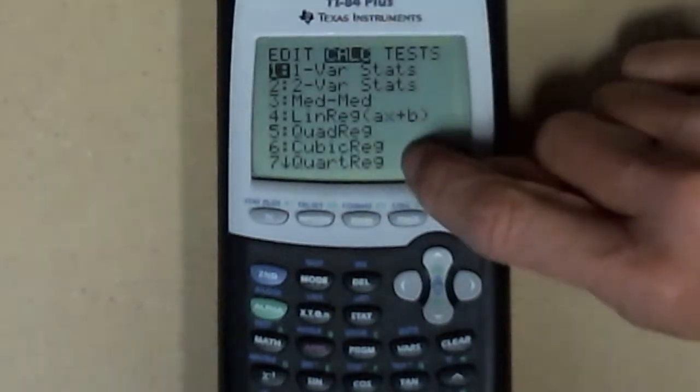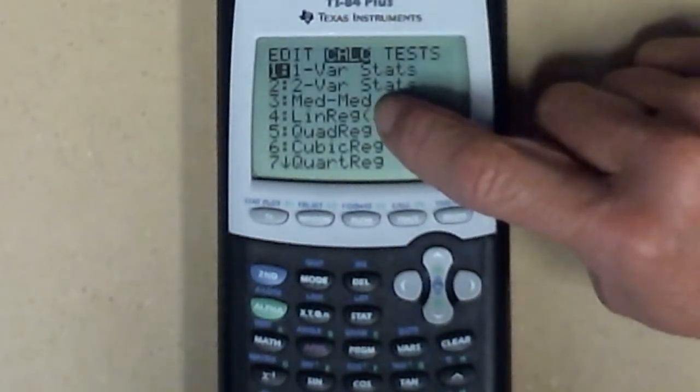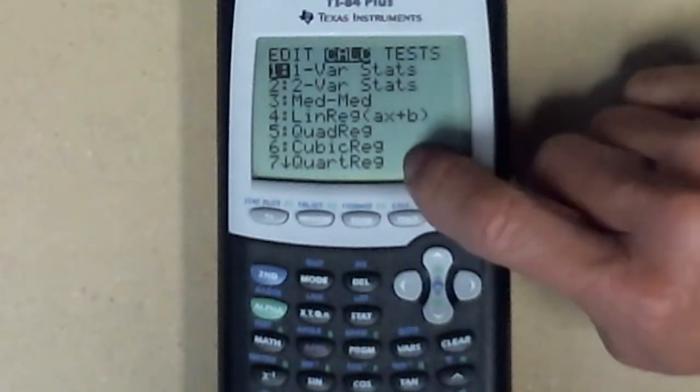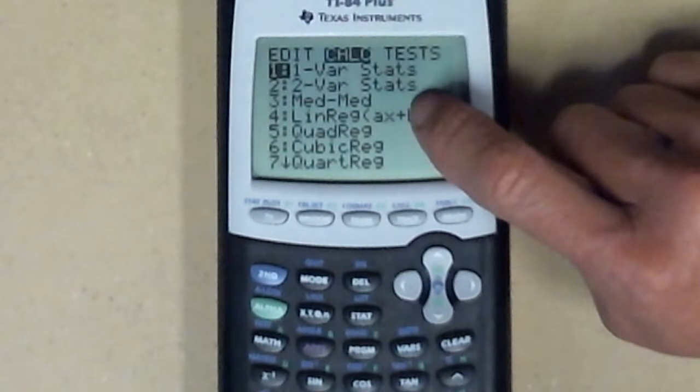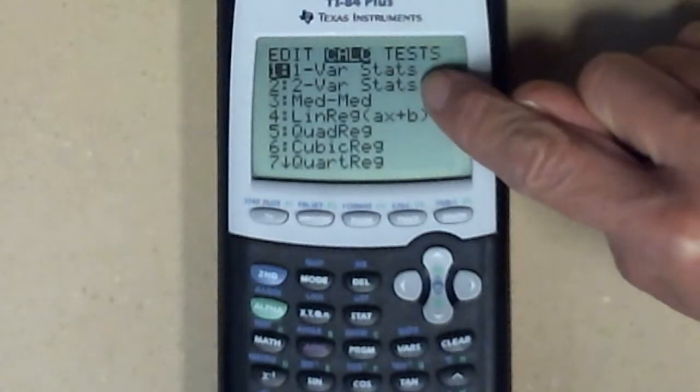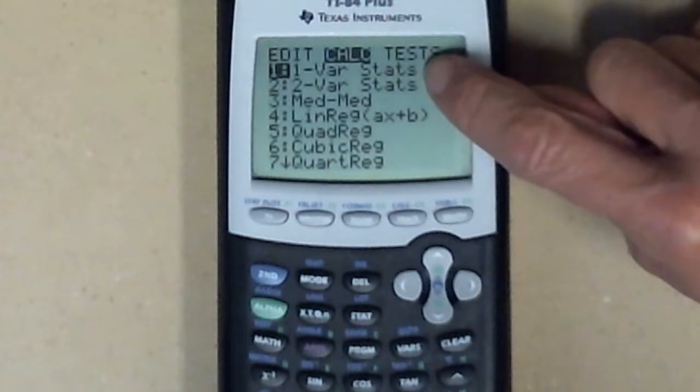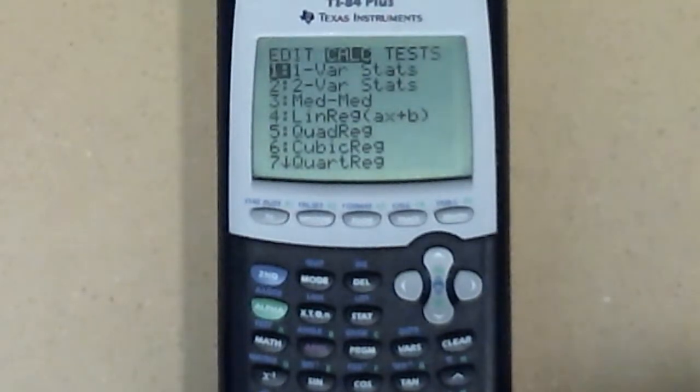Here's a list of all the different things that the Texas Instruments calculator will calculate for you. The one we're going to do is this one-variable statistics. Some of the rest of these, in fact all of them that I can see here, everybody else deals with two variables if you're trying to relate two different variables. This one, I just want to talk about what's the average score for the winning team in a Super Bowl and how much do those vary. Those are one-variable statistics. So I'm going to go ahead and hit enter.